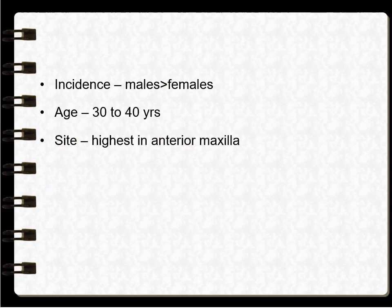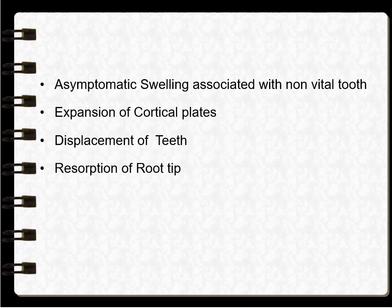The radicular cyst is more common in males than females and is commonly seen between the ages of 30 to 40 years, mainly in the anterior maxillary region. Clinically, there is asymptomatic swelling associated with non-vital teeth, expansion of the cortical plates, displacement of adjacent teeth, and resorption of the root tip.